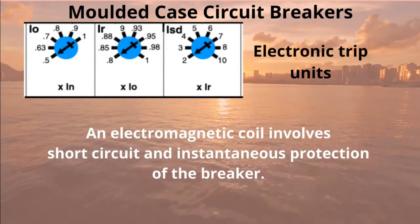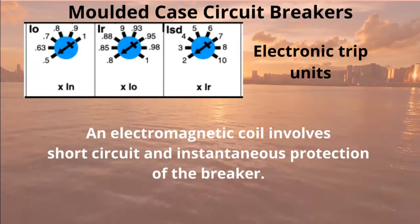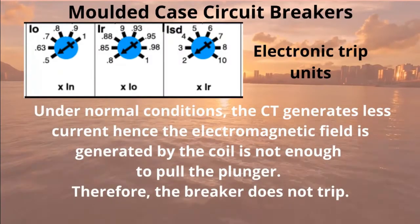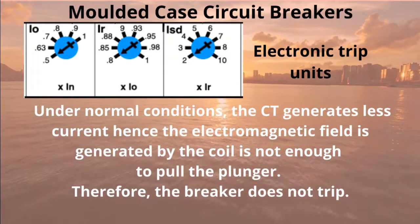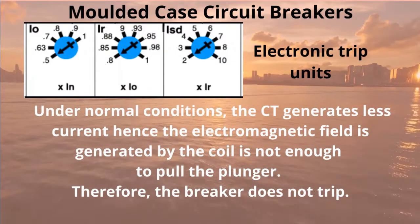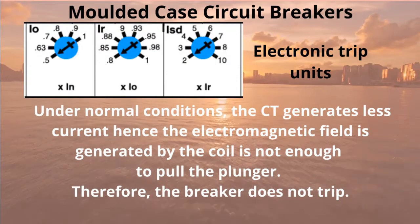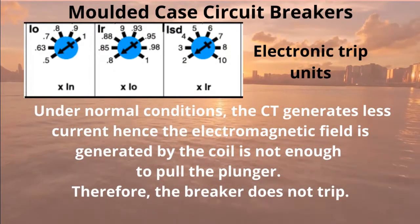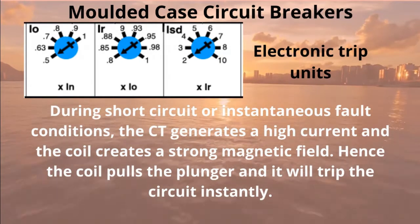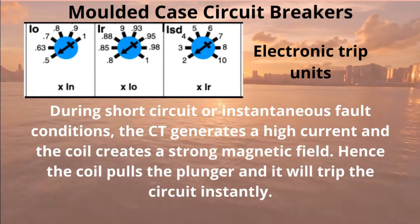For electronic trip units, an electromagnetic coil is involved in short circuit and instantaneous protection of the breaker. Under normal conditions, the CT generates less current, hence the electromagnetic field generated by the coil is not enough to pull the plunger — therefore the breaker does not trip. During short circuit or instantaneous fault conditions, the CT generates a high current and the coil creates a strong magnetic field, hence the coil pulls the plunger and trips the circuit instantly.